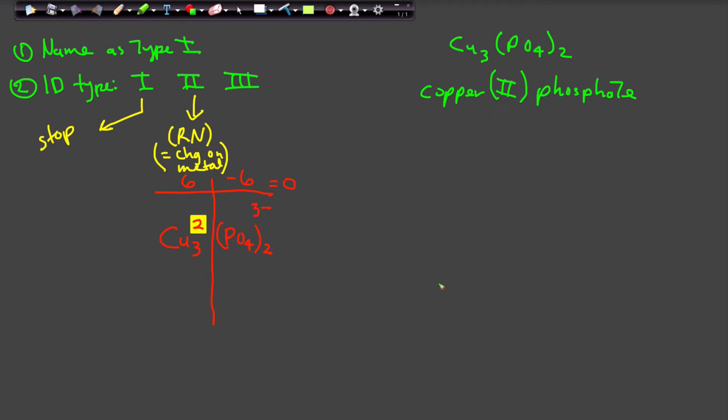And there you have it. So that's how you name a Type 1, that's how you name a Type 2. And this was a fairly difficult one. So this is copper(II) phosphate. Okay, what I would like to do right quickly is conclude this video by going over a quick Type 3.